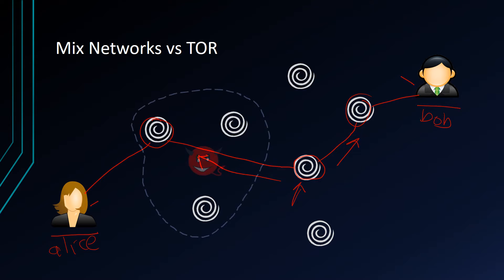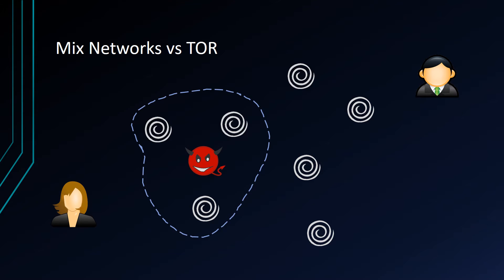This is designed to circumvent any sort of local surveillance such as your ISP or your local government. For example, let's say this is Country A and the government of Country A can observe all traffic between all nodes inside the country. In order to get to Bob, Alice has to go through Country A, so she uses a sequence of nodes. The adversary only knows that Alice is talking to the first node and that one node is talking to the next — the government doesn't know that Alice is ultimately talking to Bob. This makes the whole network resistant to malicious nodes.